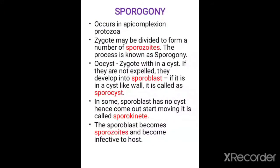Now let us come to sporogamy. It occurs in the apicomplexan protozoans. The zygote may divide to form a number of sporozoites, and the process of formation of sporozoites is known as sporogamy. Syngamy leads to zygote formation, and sometimes the zygote undergoes cyst formation, from which the sporozoites are released. The process of release of sporozoites from the zygote or the oocyst is known as sporogamy.